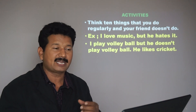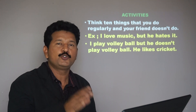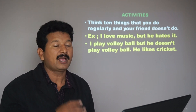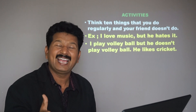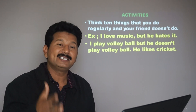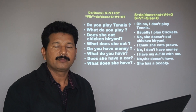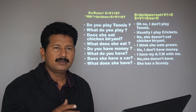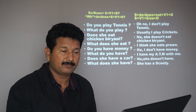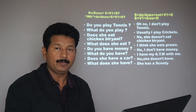Now for more perfection, here is one task for you: think of 10 things that you do regularly and your friend doesn't. For example: I love music but he hates it; I play volleyball but he doesn't play volleyball — he likes cricket. Practice this way with many examples.